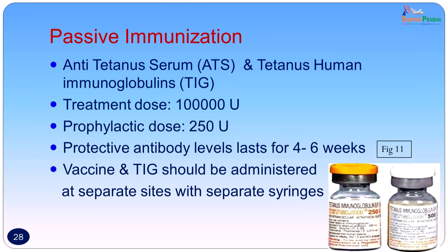Passive immunization is not routinely recommended except in a patient with a massive road injury or tetanus-prone wound where tetanus may develop — then anti-tetanic serum or tetanus immunoglobulins can be used. Whenever passive immunization is given, active immunization should be started side by side. The treatment dose for passive immunization is 1 lakh units and the prophylactic dose is only 250 international units. Protective antibodies last about 4 to 6 weeks, which is why active immunization must also be started. The vaccine and the immunoglobulin should be administered at separate sites with separate syringes for both to be effective.